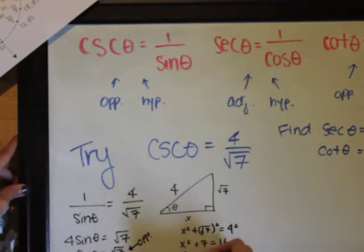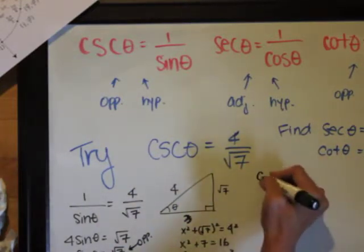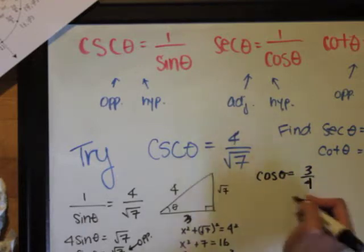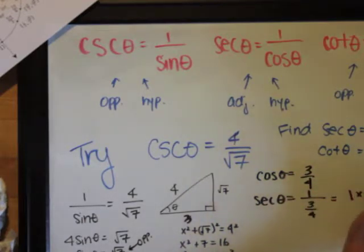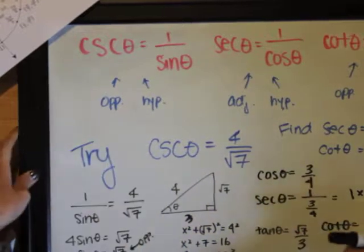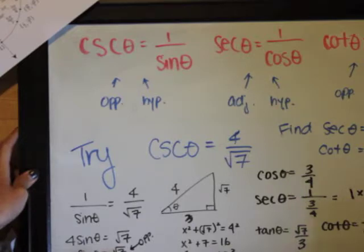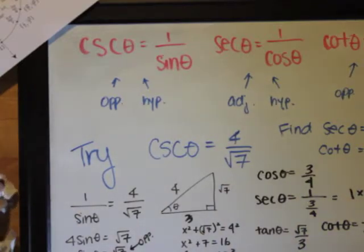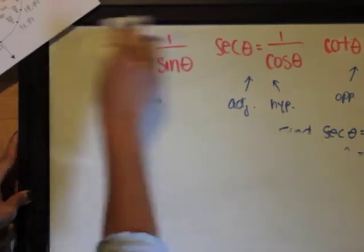So cos θ is 3/4, secant θ is 4/3, tangent θ is √7/3, and cotangent θ is 3/√7. I hope you got that, and see you in class!